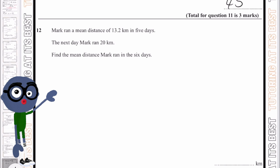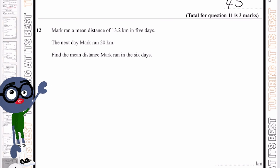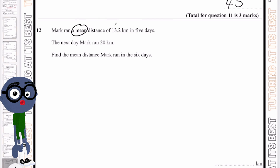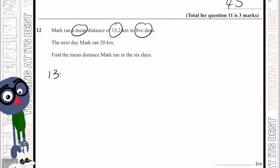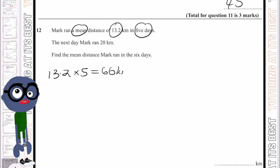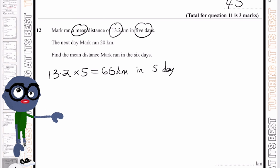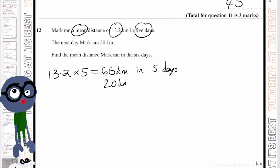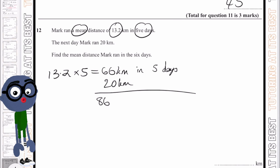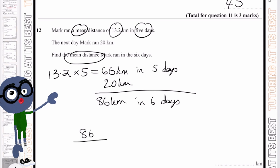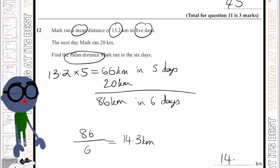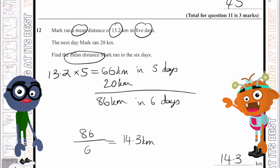Question twelve: Mark ran a mean distance of 13.2 kilometres over five days, so the total distance is 13.2 × 5 = 66 kilometres. The next day he ran 20 kilometres, giving a new total of 86 kilometres over six days. The new mean distance is 86 divided by 6, which gives 14.3 kilometres.